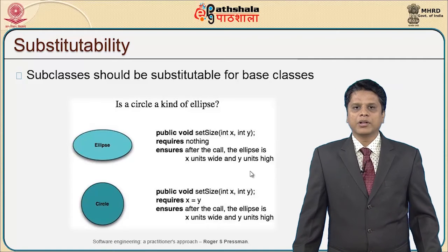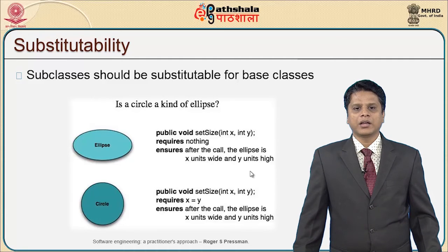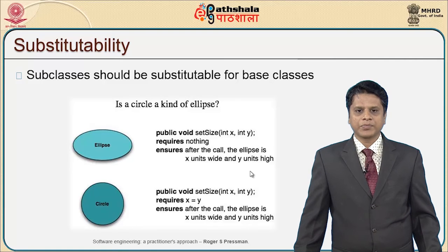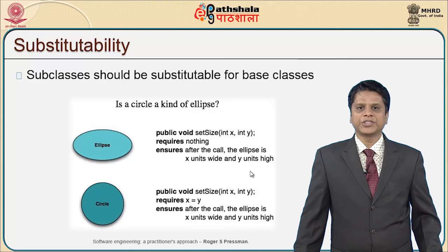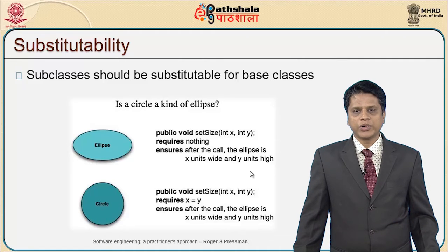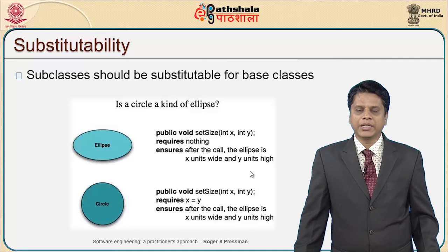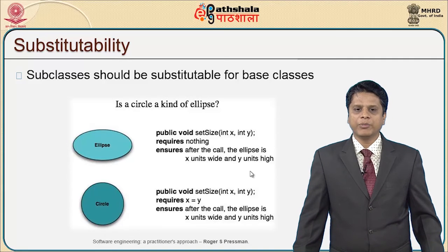Substitutability means subclasses should be substitutable for the base class. For example, is a circle a kind of ellipse? We can define public void setSize(int x, int y), common with a circle. But for a circle, it requires x equals y if two variables are defined, because a circle requires only the radius — one variable is sufficient — whereas an ellipse requires both width and height. This ensures the ellipse is x units wide and y units high, and for the circle, the width and height will be the same.